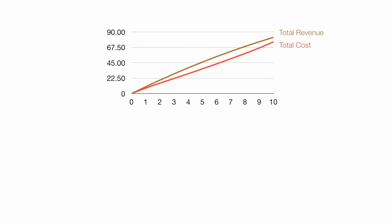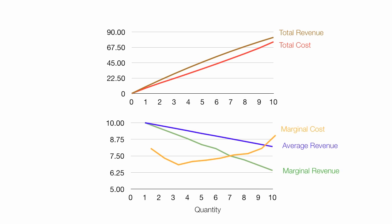One last set of curves: I'll put in the total revenue and total cost curves, and also the marginal cost, average revenue, and marginal revenue. If I go straight up, that distance between the total cost and total revenue curves is where profit is maximized.